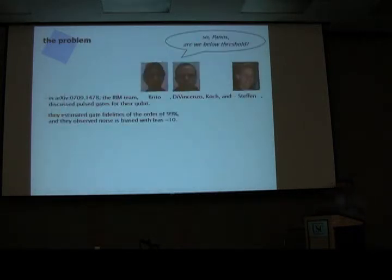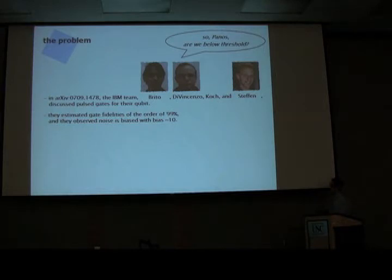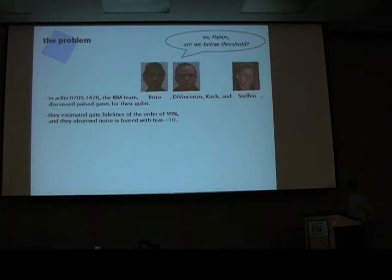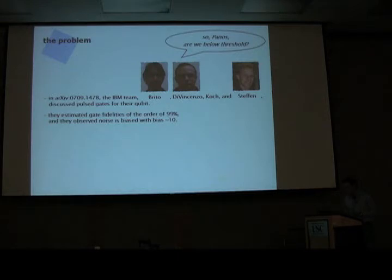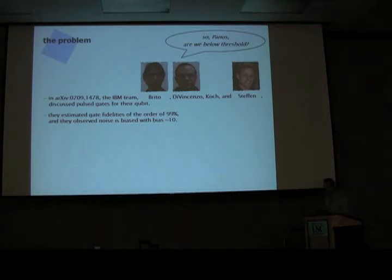You control this qubit by applying current through flux lines to induce flux on the big loops. In a recent paper, experimentalists at IBM together with theorists — DiVincenzo and Brito — proposed how to do phase gates for these qubits. They found that accounting for the many error sources they understand, the best fidelity achievable is up to 99%. They also observed that for their system, noise is biased — heavily biased — and noise is primarily dephasing.